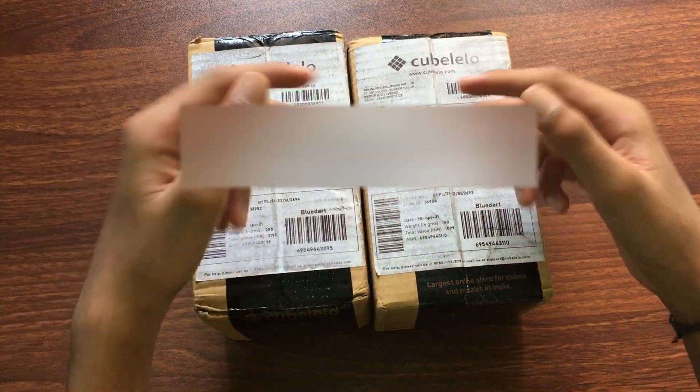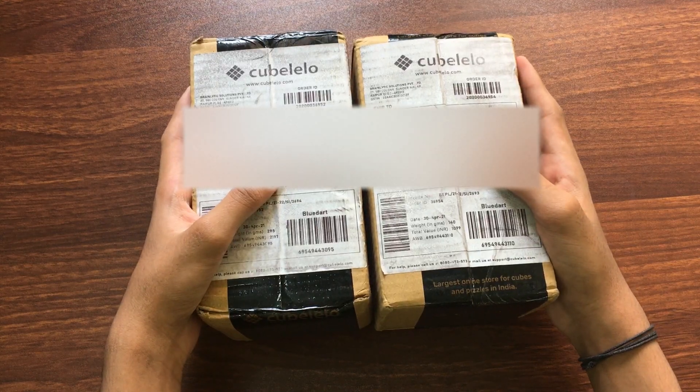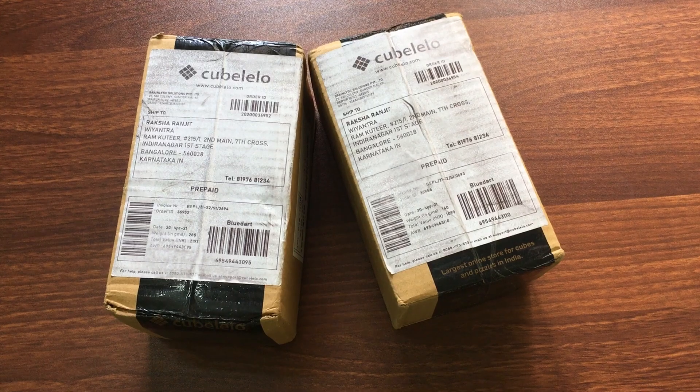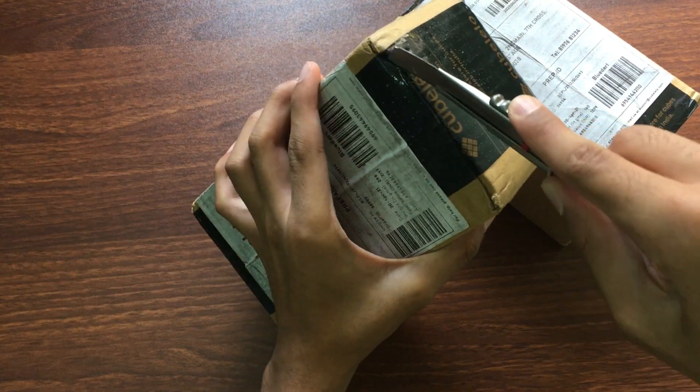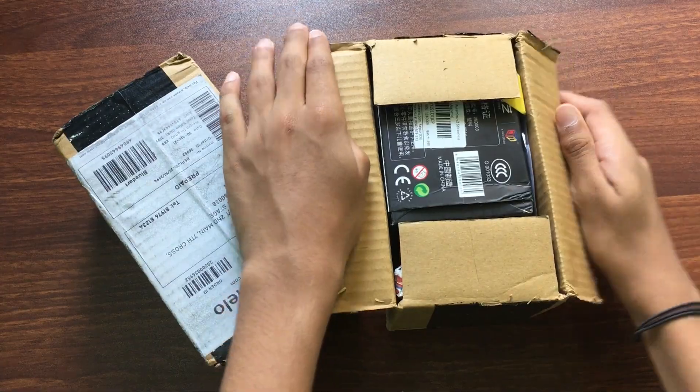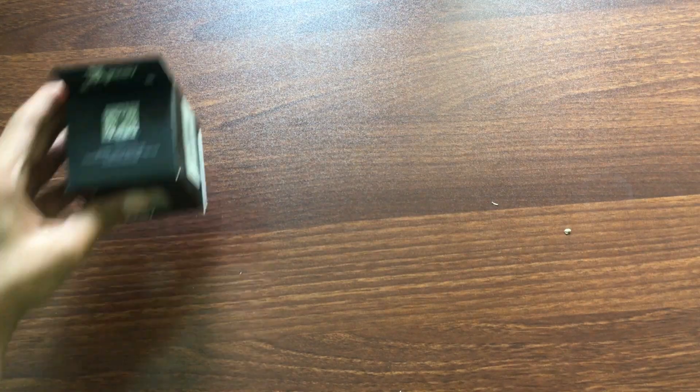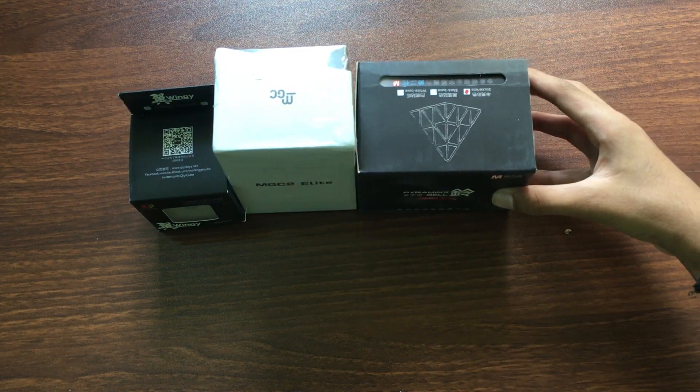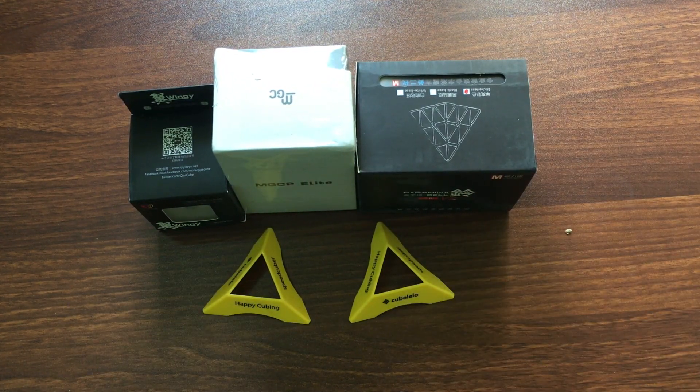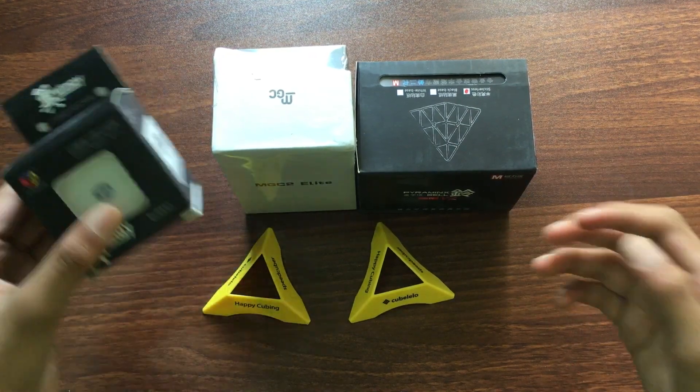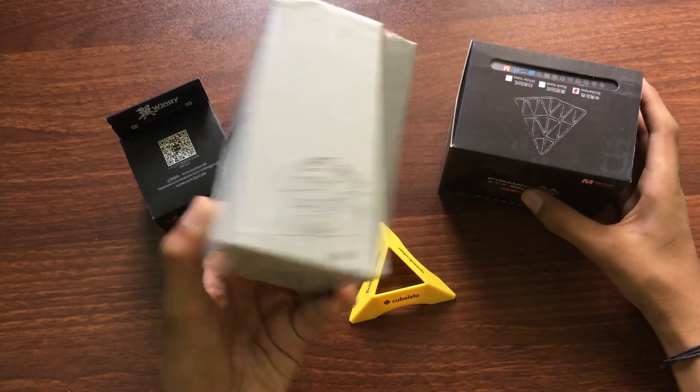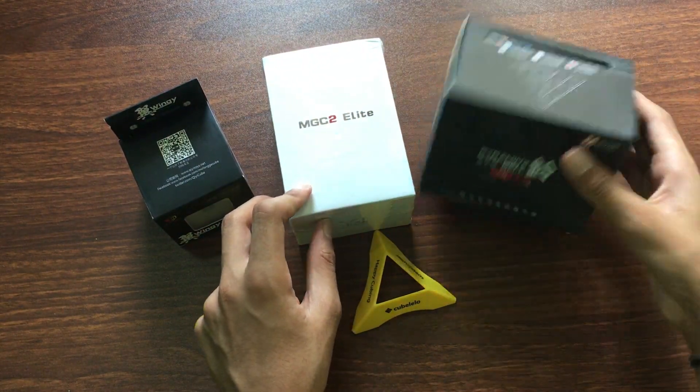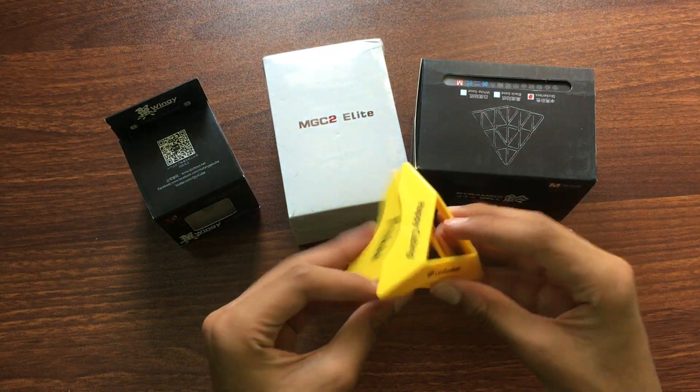Hey guys, this is Rock the Cuber here. Today I got some puzzles from Cubelelo and let's unbox it. So these are all the cubes I got. First we have the X-Men Wingy's cube, then we have the YJ MGC Elite 2x2, and X-Man Bell v2 Pyramix, and also these yellow cube stands.